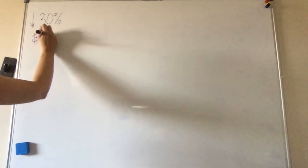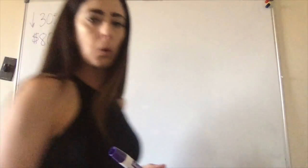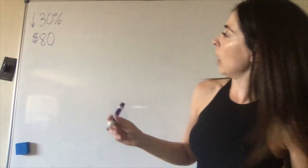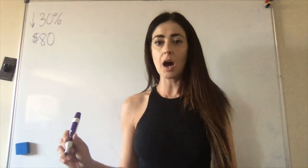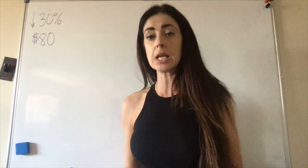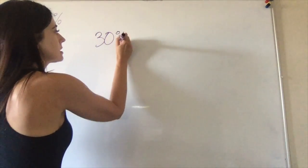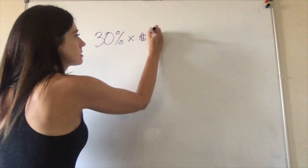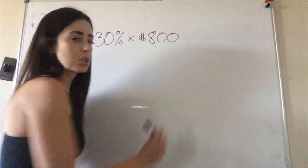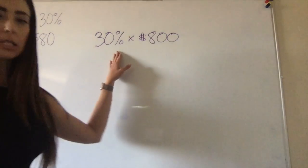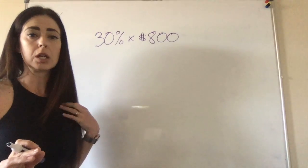So I'm going to take my notes again, and I have a markdown of thirty percent with the original price of eighty dollars. I'm going to do my is-of statement: what is thirty percent of eighty? And that's going to tell me my discount. So what is thirty percent of eighty dollars?